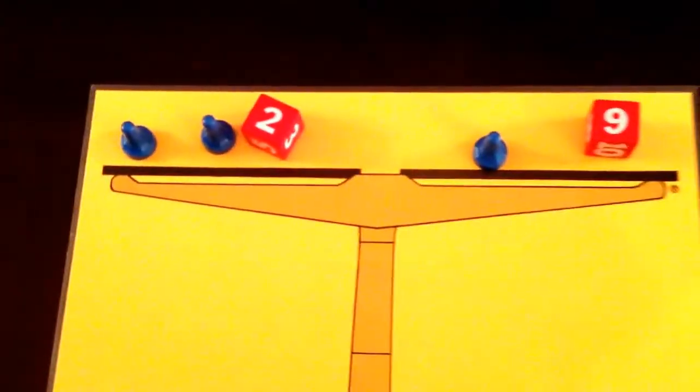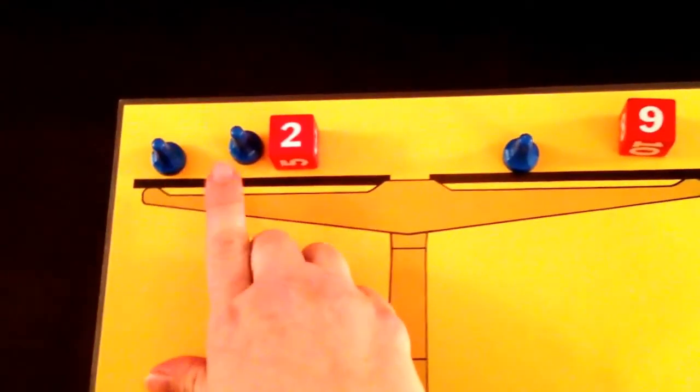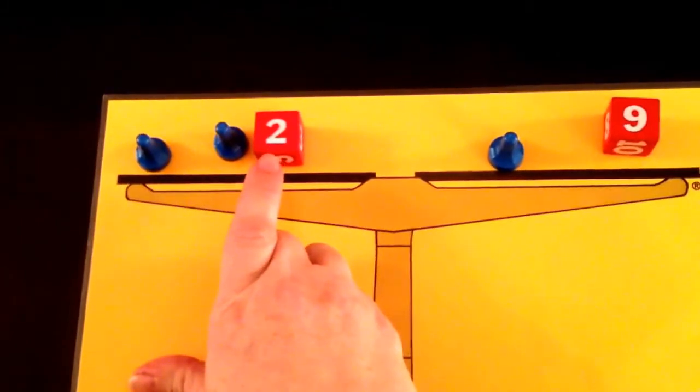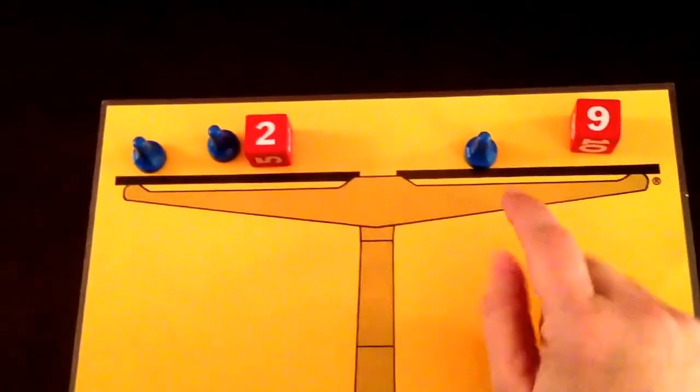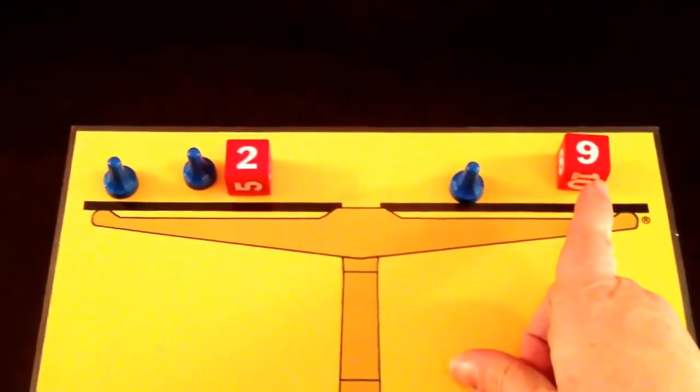And we said that X was equal to 7. So now we're going to check it. So we have 7 plus 7 is 14, plus 2 is 16. And over here we have 7 plus 9 which is 16.